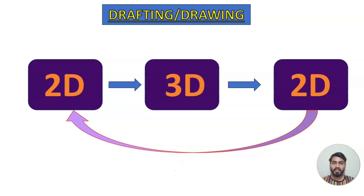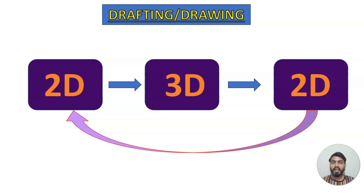Welcome to my channel. In this tutorial we are going to see an introduction to drafting or drawing. Drafting or drawing means the conversion of a 3D model into a 2D drawing. Usually we create 3D models using CAD software like CATIA or SolidWorks, and then we convert that 3D model into 2D — that is called drafting or drawing.